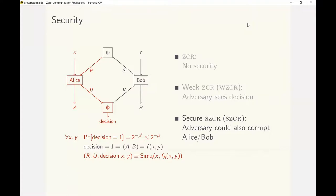That is, for any input xy, the joint distribution over r, u, and the decision of the predicate must be simulable using only Alice's input and her correct output. A similar security requirement should also hold for Bob.